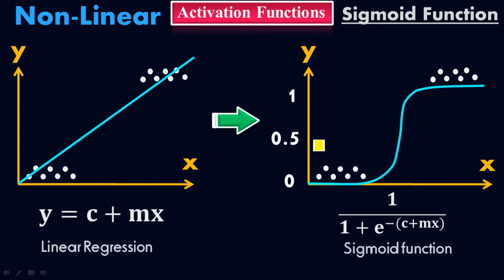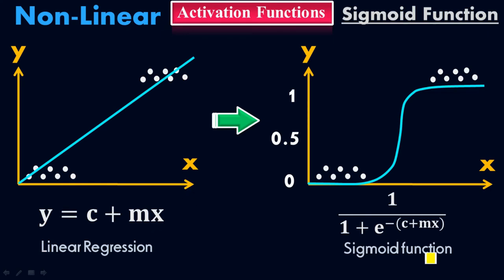Now I can see that 0.5 is the threshold value. Above the threshold boundary we have class 1, and below the threshold boundary we have class 2. We have separated the two data sets perfectly with the help of the sigmoid function. The mathematical equation is 1 over 1 plus e to the negative of (c plus mx), and because of this equation you get the sigmoid-shaped graph.